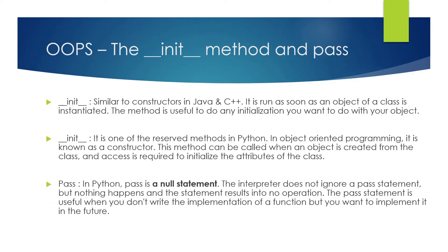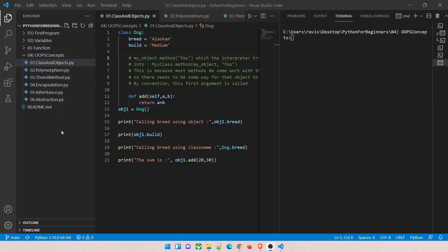The second thing is 'pass'. In Python, 'pass' is almost equal to a null statement — the interpreter does not ignore it, but nothing happens when it executes, resulting in no operation at all. The 'pass' statement is useful when you don't write the implementation of a function but want to implement it in the future — you just write 'pass' and Python will not perform any activity there. With that, let's dive into the demo to understand all of these concepts.